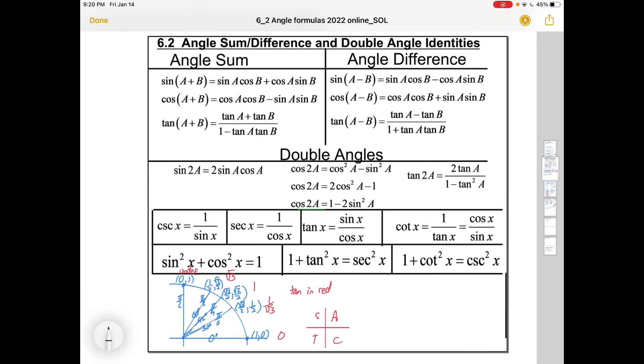Hi folks, welcome back to round two of angle sum and difference formulas and double angle identities. Here's our formula sheet that you should probably have in hand throughout this process or on a screen. Today we're going to look at doing some proofs, using the double angle formulas to find missing ratios, and simplifying some trig functions.